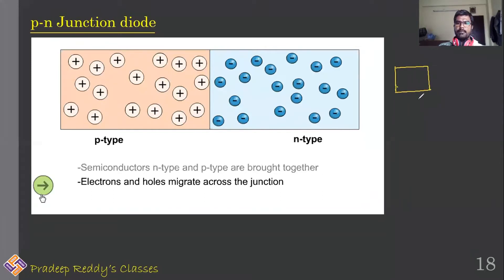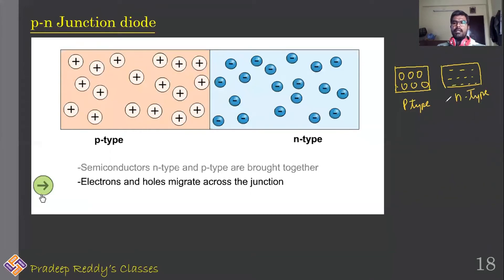A p-type semiconductor has majority charge carriers which are holes, and an n-type semiconductor has majority charge carriers which are electrons. A p-n junction diode is formed by joining these two — by joining p-type and n-type semiconductors.